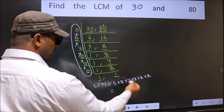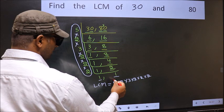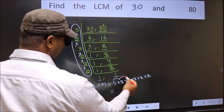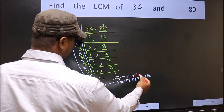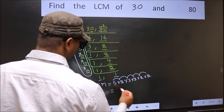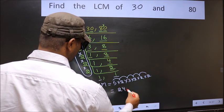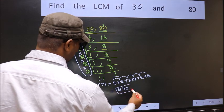So let us multiply these numbers. 5 into 2 is 10, into 3 is 30, into 2 is 60, into 2 is 120, into 2 is 240. So 240 is our LCM.